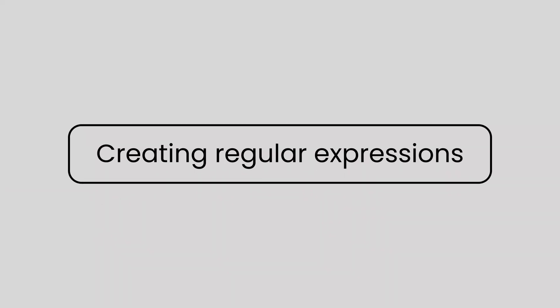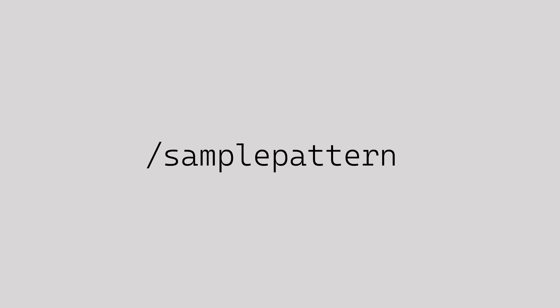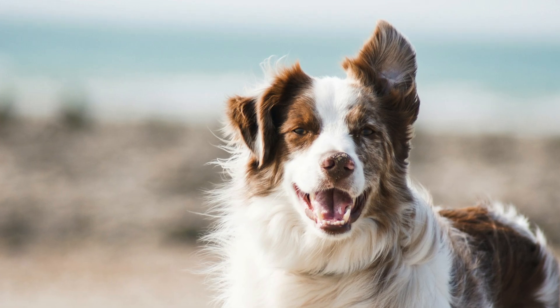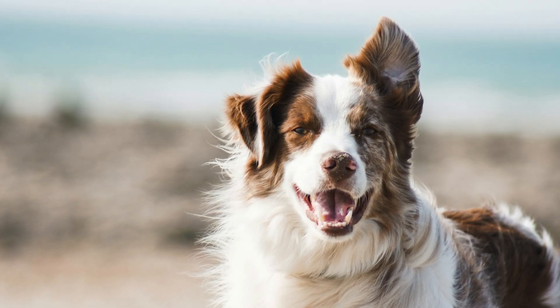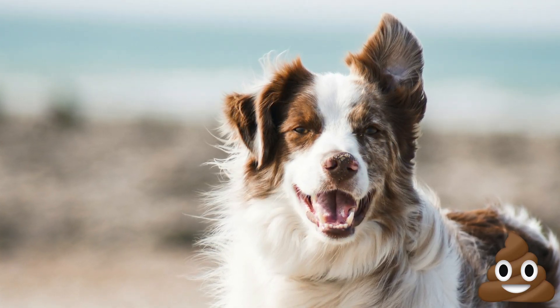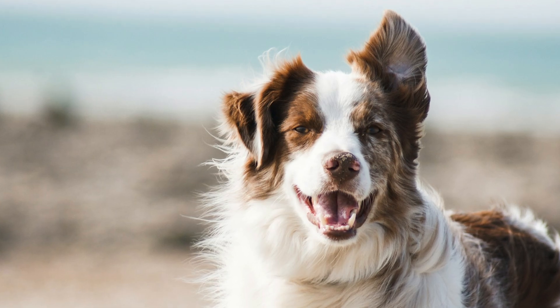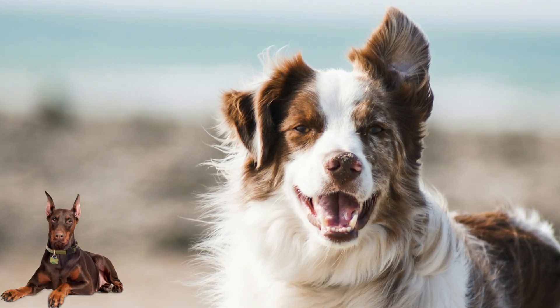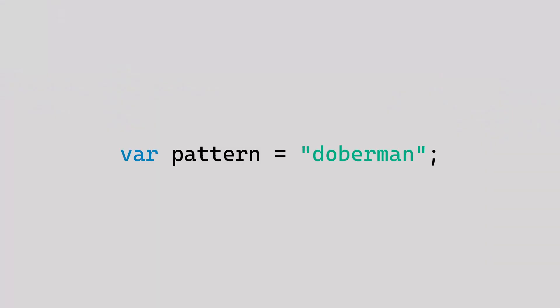First up is how to create a regular expression. They are often created by placing the characters you want to match between two forward slashes, but in C#, which we'll be using in this video, the characters are placed inside double quotes. The characters you put between the double quotes represent what pattern you want to match in a piece of text. Let's say you have a long paragraph talking about how to teach a dog to poop outside, and you want to check if a particular breed like Doberman is mentioned. You'd write the word Doberman in between two double quotes and store this pattern in a variable.